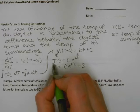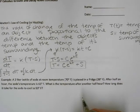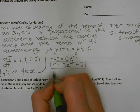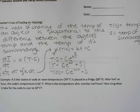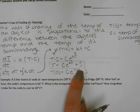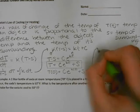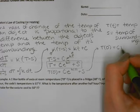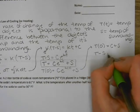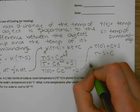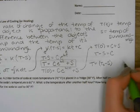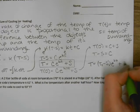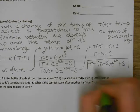Now to find the initial value, I plug zero in for t. That gives T(0) equals C·e^(k·0) plus S, and e to the zero is just one, so T(0) equals C plus S. Therefore C equals T(0) minus S. So the formula is: the ending temperature equals the initial temperature minus the surrounding temperature, times e to the kt, plus the surrounding temperature. That is the general solution to the differential equation.